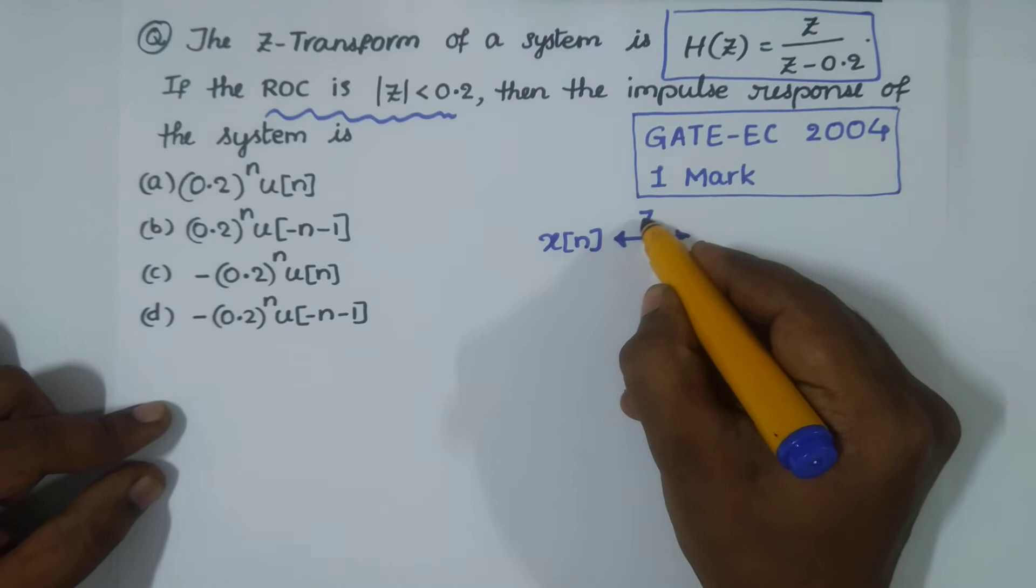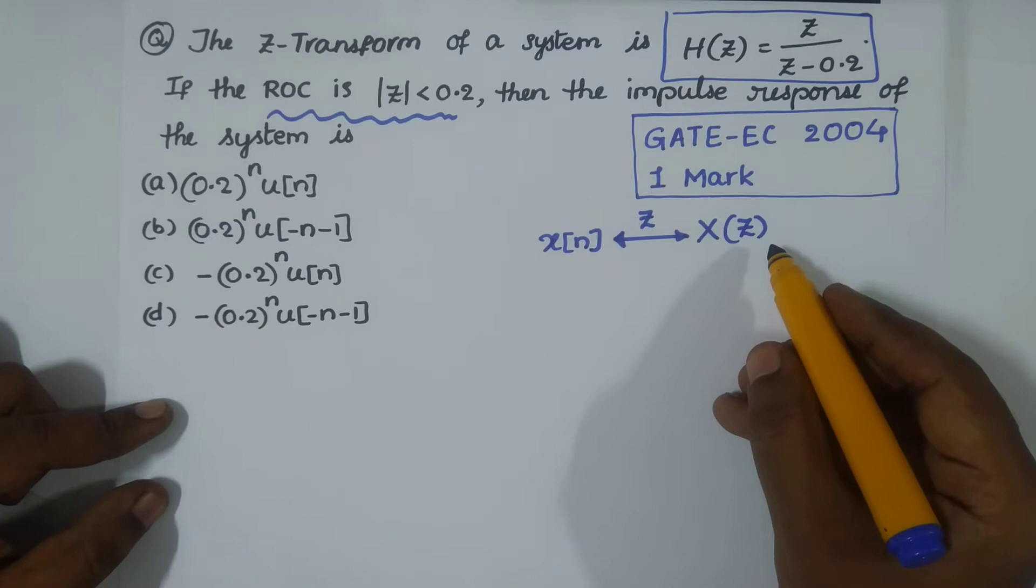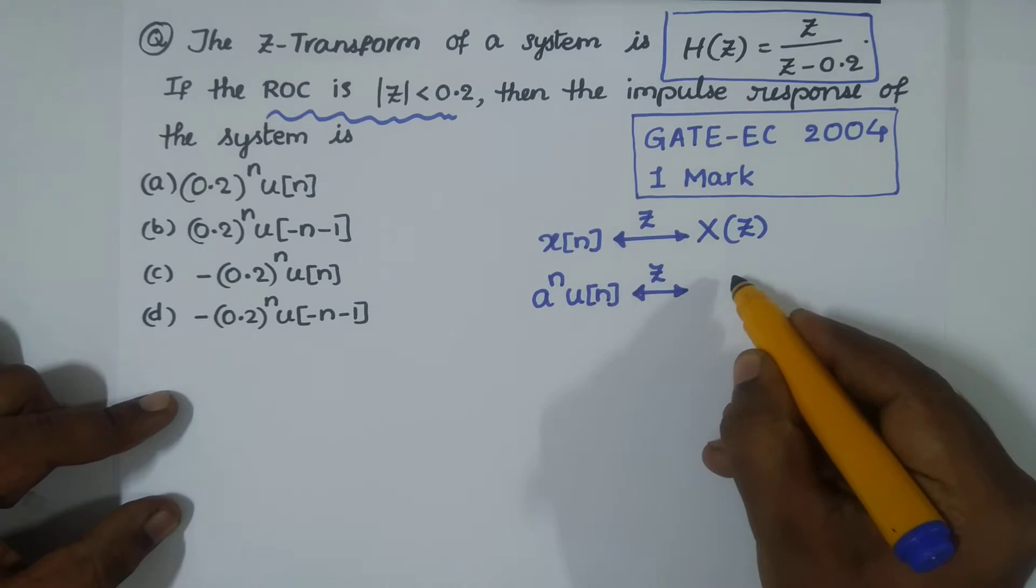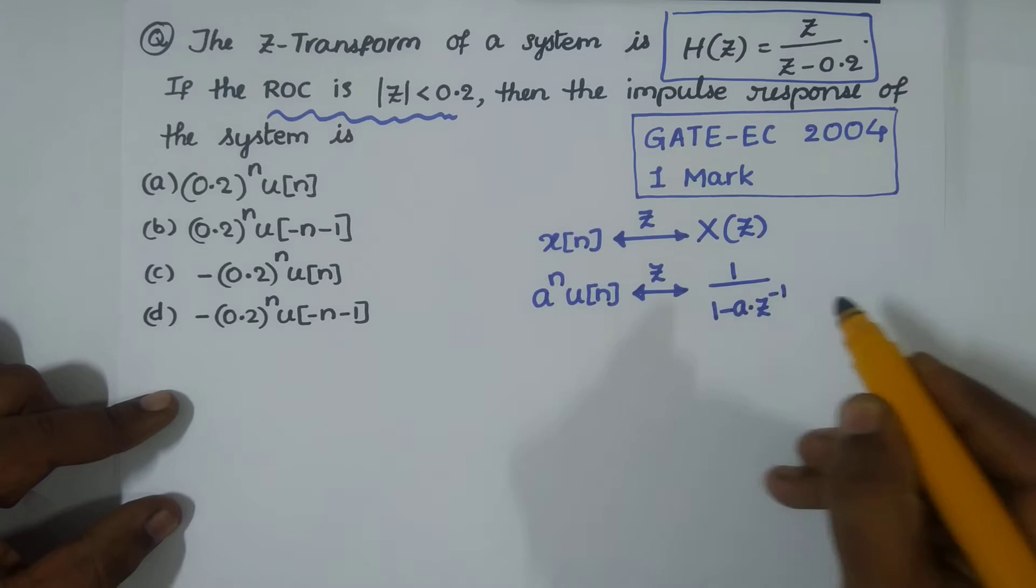If you have a causal sequence, infinite duration causal sequence, then its Z-transform is 1/(1 - a·z^(-1)). This is also equal to z/(z - a).